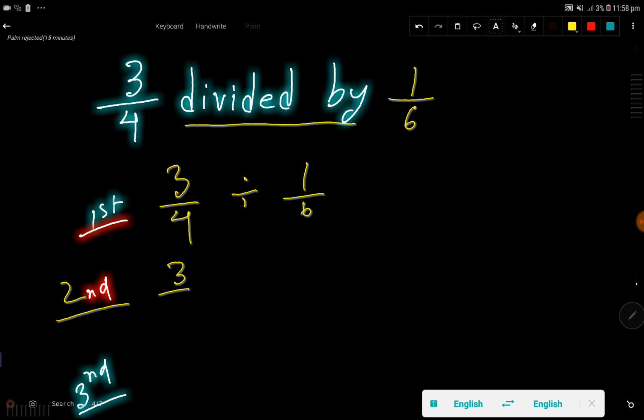In the second step I will change this division sign to multiplication sign and then I will take the reciprocal of this fraction, that is 6 over 1. The reciprocal of 1 over 6 is 6 over 1. Just you have to interchange the position of numerator and denominator.